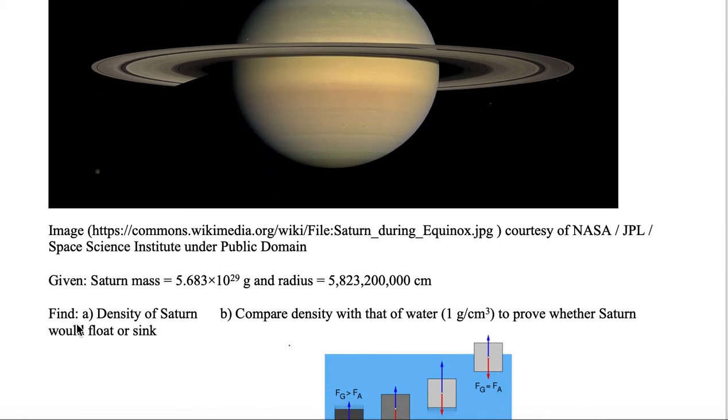Our goal is to A, find the density of Saturn, and B, compare the density with that of water, which is 1 gram per centimeter cubed. We would like to prove whether or not Saturn would float or sink.